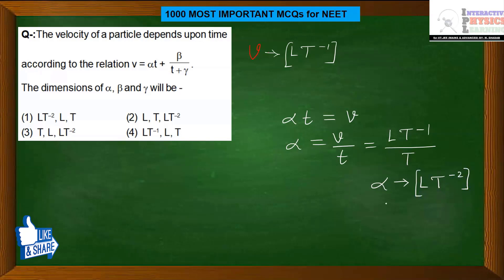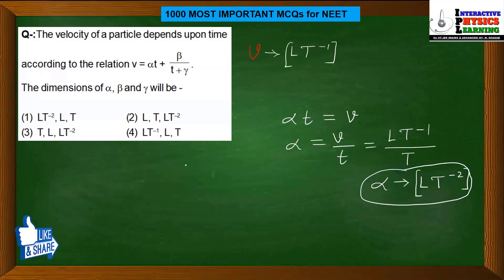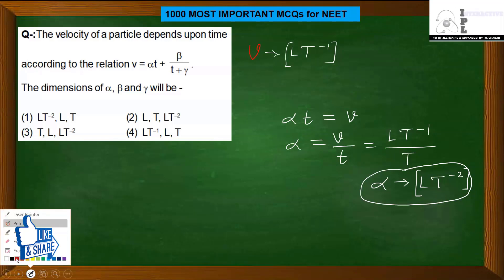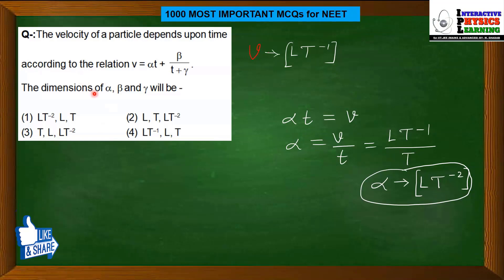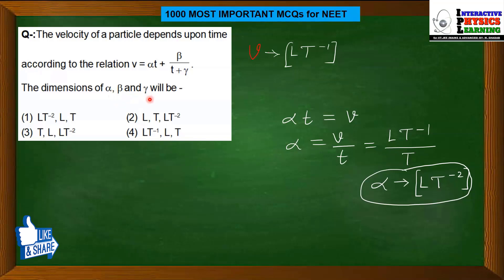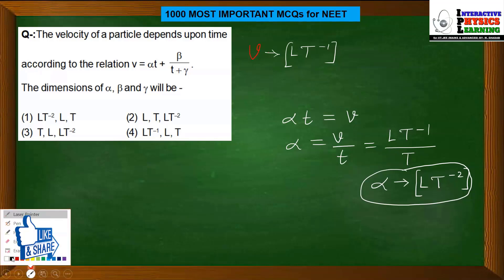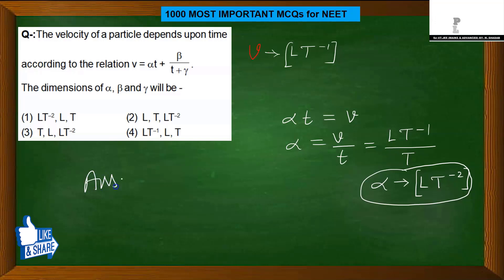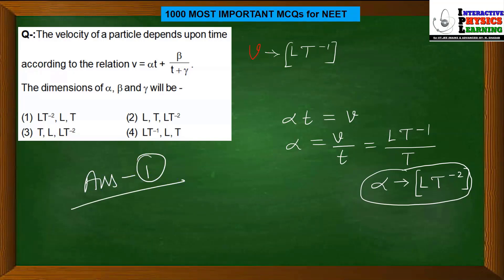So the dimensional formula of alpha is LT⁻². Now, we don't need to find all the other constants. The question asks for alpha, beta, and gamma in order. We confirmed alpha first, and its dimensional formula is LT⁻². Looking at option 1, it shows LT⁻², whereas option 2 has LT⁻¹ and another has just L. So we don't need to find beta and gamma — we can confidently say the answer is option 1, which is LT⁻² · L · T.